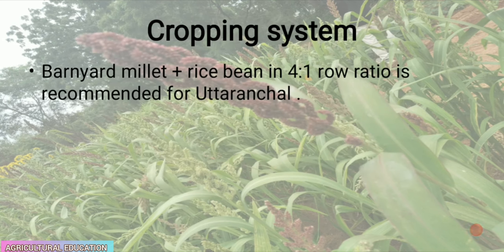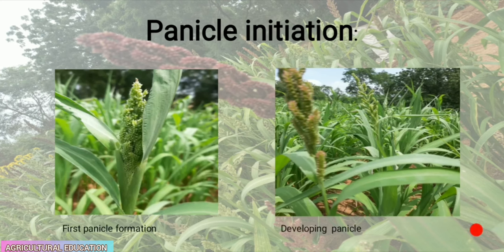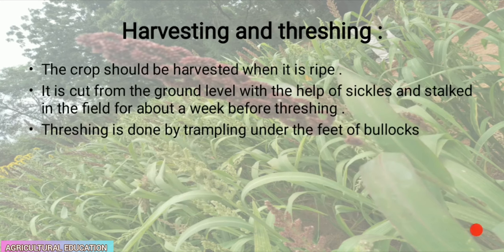Barnyard millet is cultivated along with rice bean in a 4:1 row ratio in Uttaranchal. For harvesting, the crop should be harvested when ripe. It is cut from the ground level with sickles and stacked in the field for about a week before threshing. Threshing is done by trampling under the feet of bullocks.